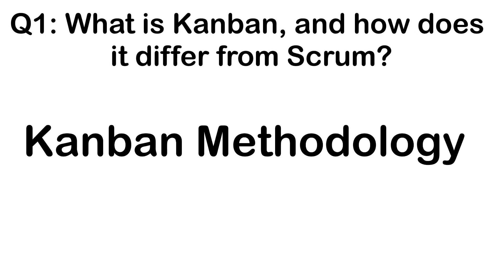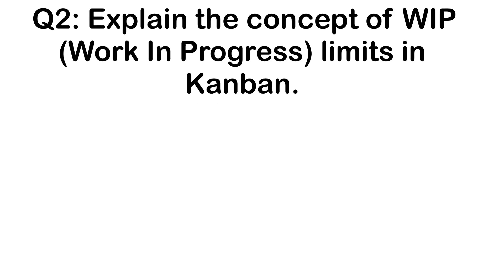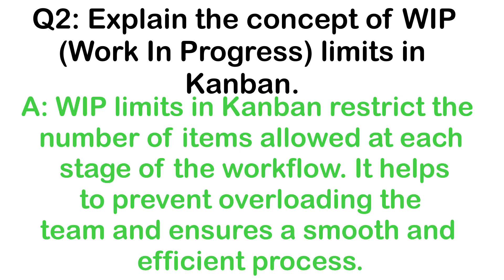What is Kanban, and how does it differ from Scrum? Kanban is a visual management method that focuses on continuous delivery. Kanban does not have fixed-length iterations, and allows for a more fluid workflow. WIP, which stands for Work in Progress limits in Kanban, restricts the number of items allowed at each stage of the workflow. It helps to prevent overloading the team and ensures a smooth and efficient process.